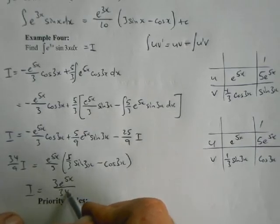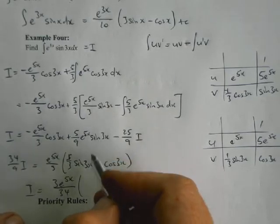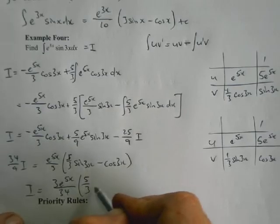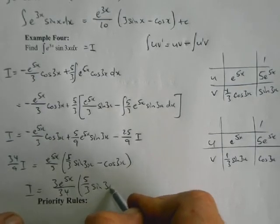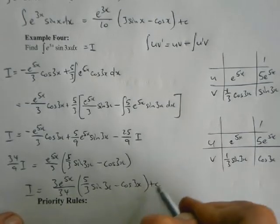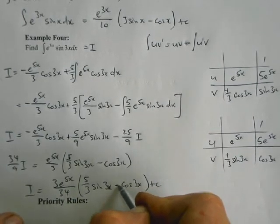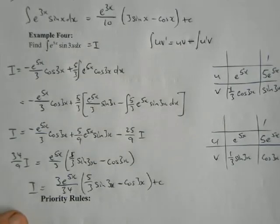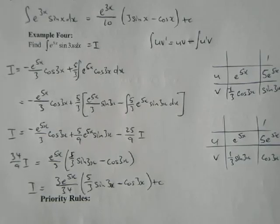So I equals 9 up and 34 down. So it's 3 e to the 5x over 34, and then in brackets 5 sin 3x minus cos 3x plus c for integration. So that's the integration by parts twice again, which matches, and you need that cancellation as you go along. Quite a nice little trick.